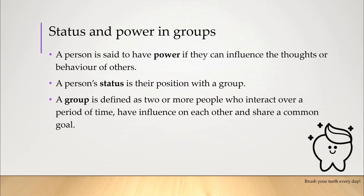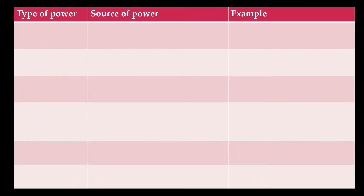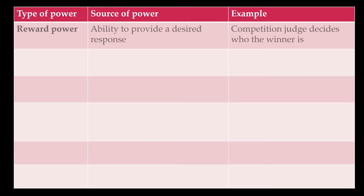There are different types of power that someone can have over another. The dentist had some power over me, but so did I over him. Social psychologists suggest that there are six types of power. There's the power you might have if you have a reward the other person wants — for example, the judge in a competition has power if they get to decide who the winner is.